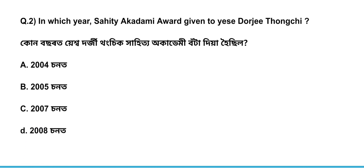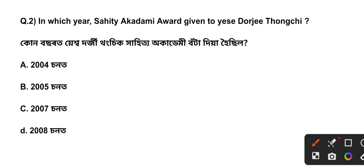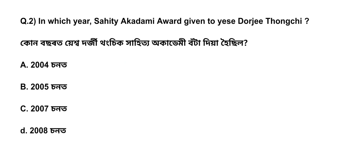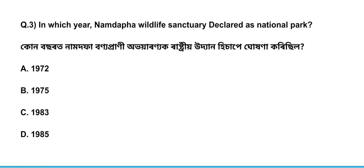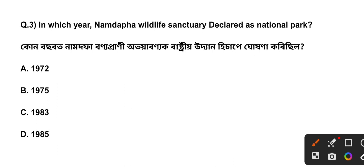Question Number 2. Question Number 3: In which year was the Wildlife Century declared as National Park? The answer is Option C, 1983.